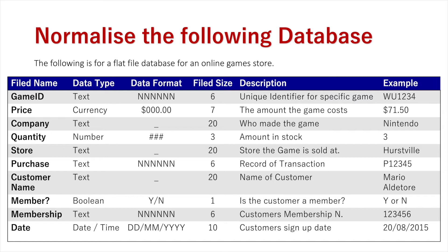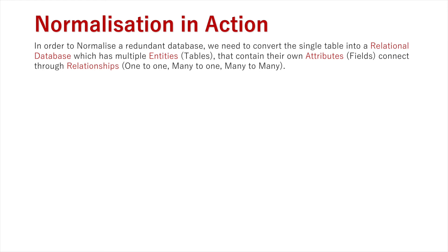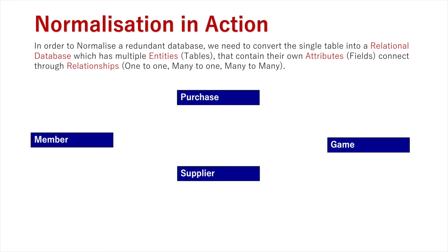What we'd want to do is normalize this database — instead of manually entering everything every time a purchase takes place, we can reference data stored in multiple entities where those records already exist. To normalize this redundant database, I would turn this single table into a relational database comprised of multiple entities. A relational database is comprised of multiple entities — tables — that contain their own attributes and fields, connected through relationships: one-to-one, many-to-one, and many-to-many. In order to normalize this database, I'm going to start with the entities pulled from the flat file database.